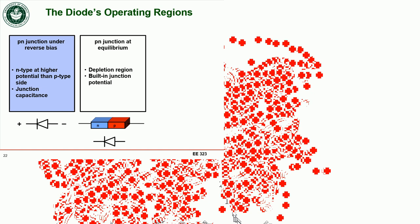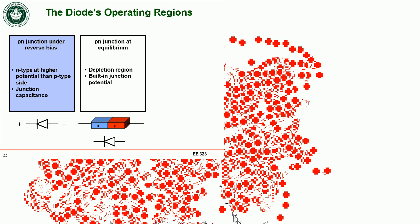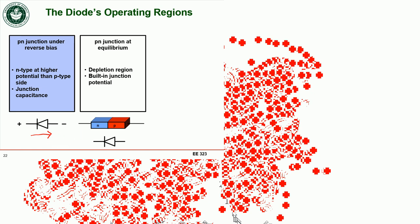In reverse bias, a more positive voltage is applied to the cathode — that's the n-type side — and a negative voltage to the anode. With the n-type side at a higher potential than the p-type side, current would have to flow opposite to the diode arrow, so very little current flows. However, we can change the junction capacitance by varying the reverse bias voltage.